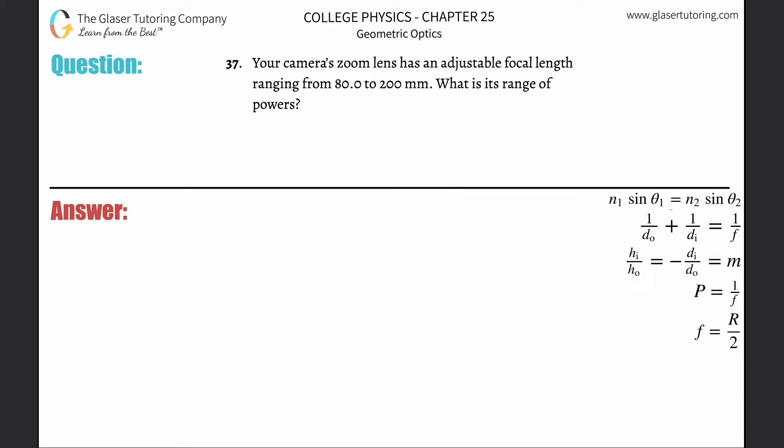Number 37: Your camera zoom lens has an adjustable focal length ranging from 80 to 200 millimeters. What is its range of powers? The relationship between power in diopters and focal length is a reciprocal relationship, kind of like period and frequency. This f, by the way, is not frequency - it stands for focal length.